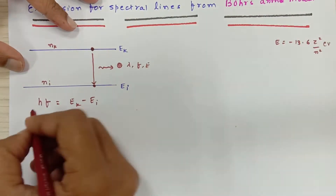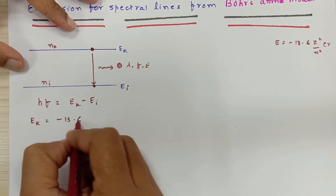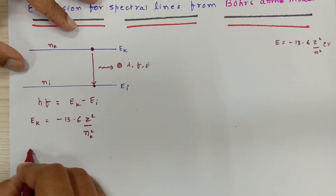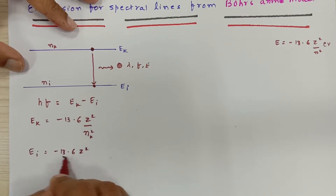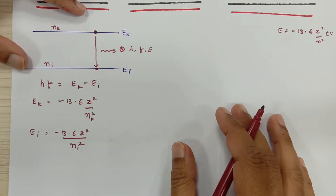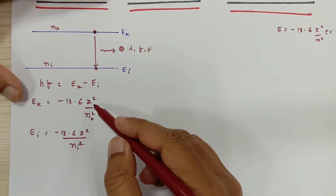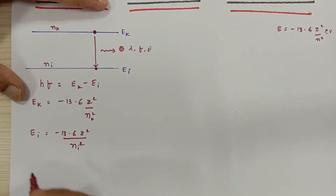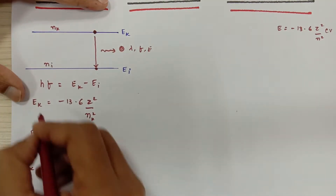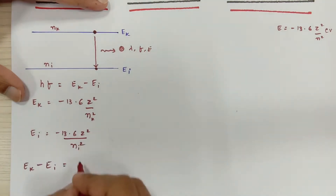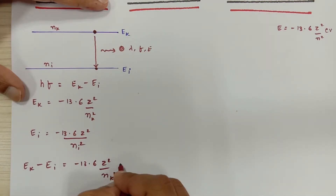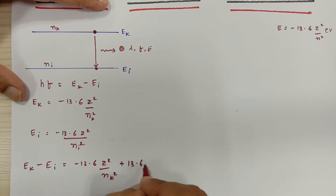So substituting: Ek equals minus 13.6 Z² upon Nk², and Ei equals minus 13.6 Z² upon Ni². Since both orbits belong to the same atom, the atomic number Z is the same for both. So Ek minus Ei — higher energy orbit minus lower energy orbit — equals minus 13.6 Z² upon Nk² minus of (minus 13.6 Z² upon Ni²).